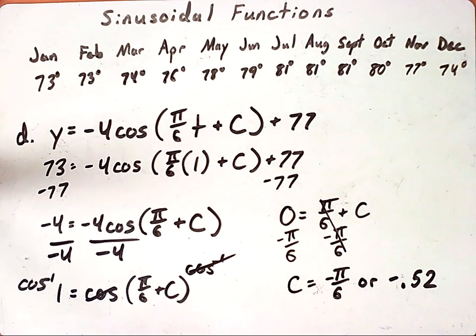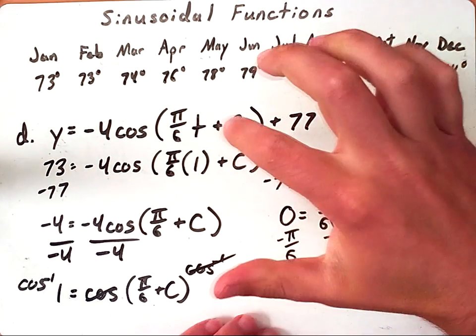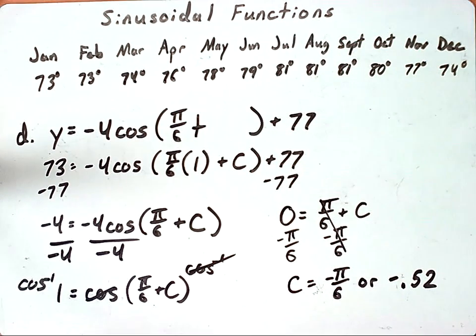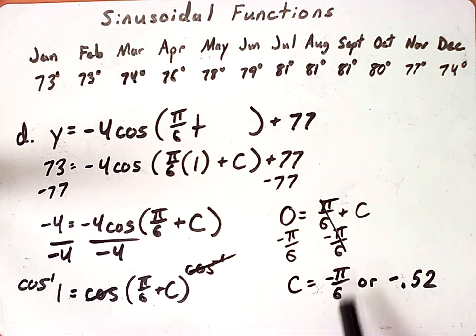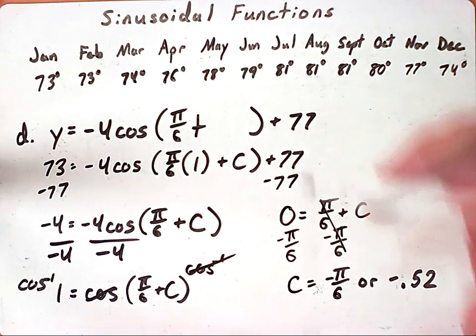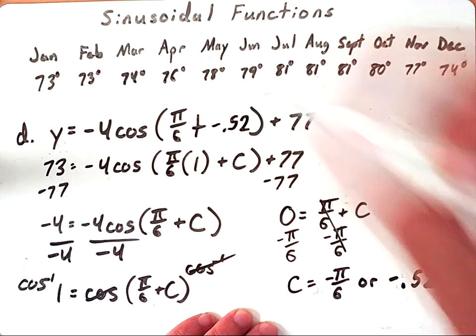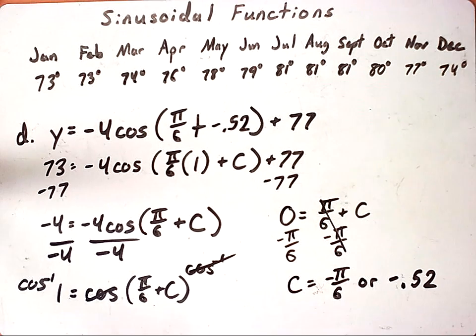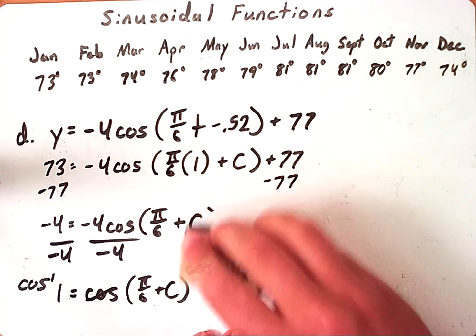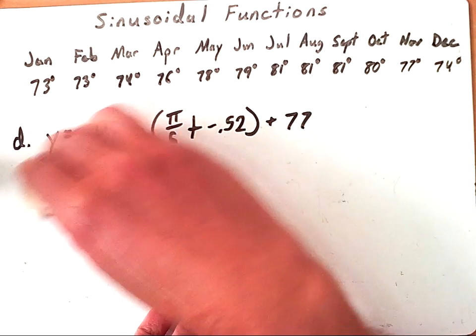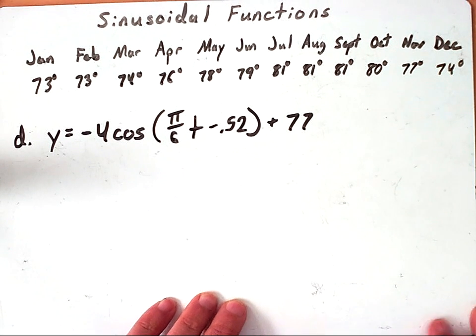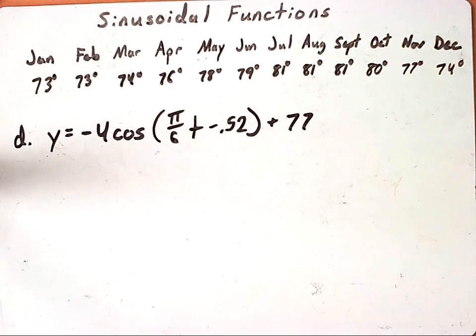Now that we have C we could plug it into our equation. Now a common mistake is a lot of times when we are given a phase shift, C is the opposite sign of our phase shift. However this equals C, so whenever I plug it in I want to leave it as whatever sign it is, negative or positive. So now I have my complete equation: Y equals negative 4 cosine π over 6t minus 0.52 plus 77.